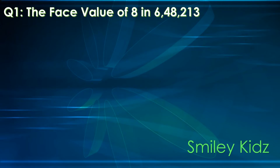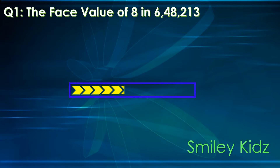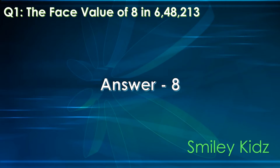Question number 1. The face value of 8 in 6,48,213 — your time starts now. The correct answer is 8. The face value of 8 in 6,48,213 is 8, because the face value of any digit is the number itself.